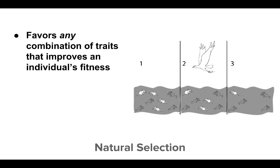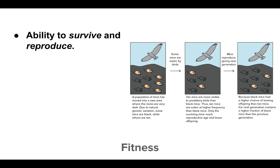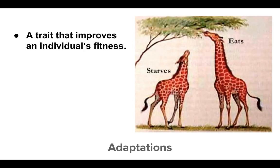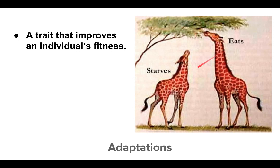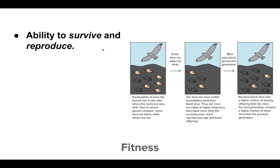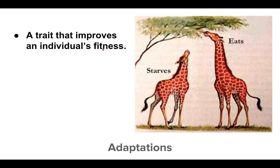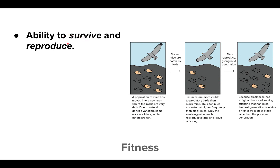When we talk about natural selection, we have to discuss fitness and adaptation — it's important not to confuse the two. Fitness is the ability to survive and reproduce, whereas an adaptation is a trait that improves an individual's fitness. For example, the giraffe with the longer neck is able to reach higher branches and eat more food, improving its fitness and allowing it to survive and reproduce.